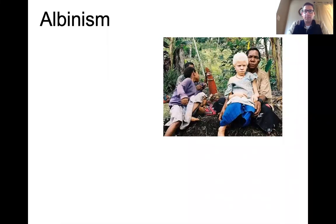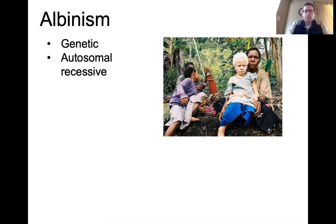We are going to be taking a look at some different skin disorders and problems today, starting with albinism. This is a genetic disorder — specifically an autosomal recessive disorder, so it's not carried on the X or the Y chromosome. It's carried on one of the other chromosomes, and it is recessive, meaning you have to inherit two genes, one from each parent, in order to have this disorder.